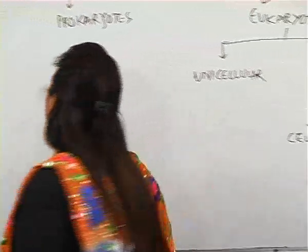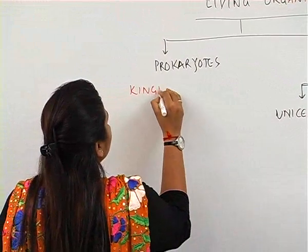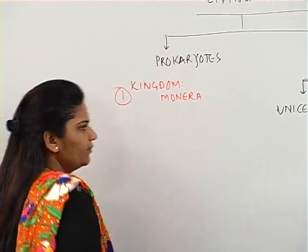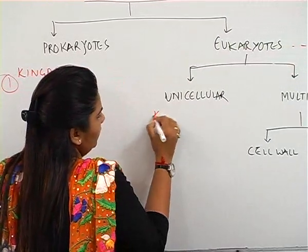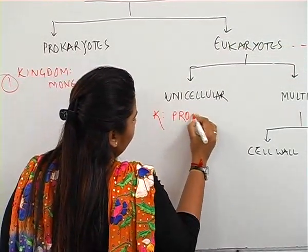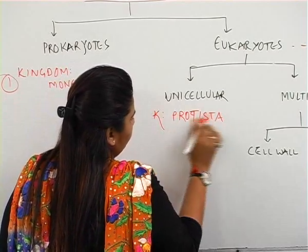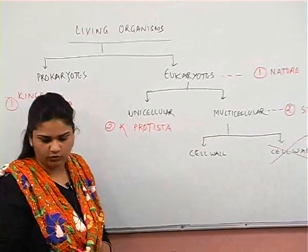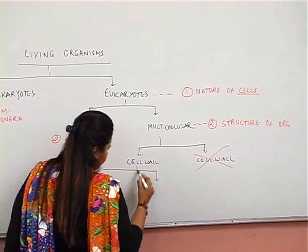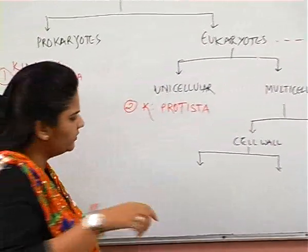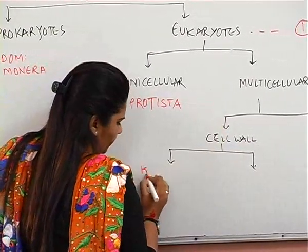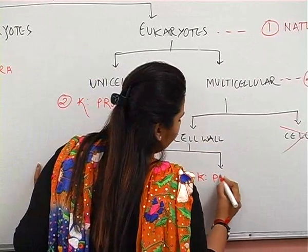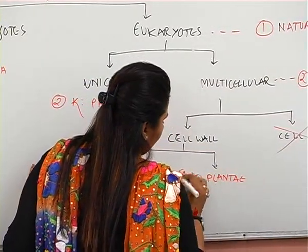Under prokaryotes there is one kingdom called Kingdom Monera. Under unicellular eukaryotic organisms comes Kingdom Protista — that is the second kingdom. Depending on having a cell wall or not, there is further classification. There are two kingdoms which have a cell wall: Kingdom Fungi, the third one, and Kingdom Plantae — the kingdom of plants — that is the fourth one.